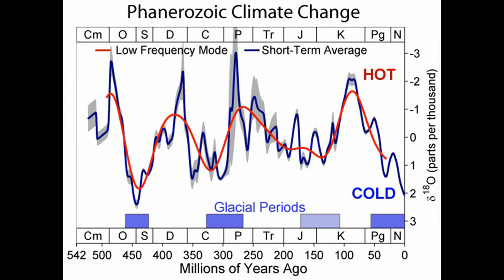Right now, the last ice age ended about 10,000 years ago with the extinction of the large mammals — woolly mammoths, mastodons, giant ground sloths. Over the last 10,000 years we have been in an interglacial, where temperatures have been increasing. These graphs show temperature and precipitation throughout the year: the equatorial area is hot and wet, polar areas are cold and dry.